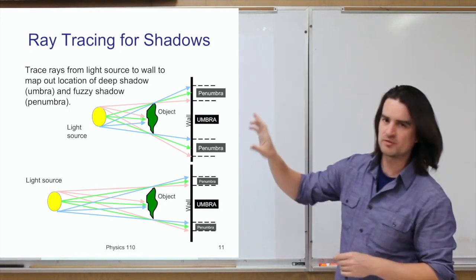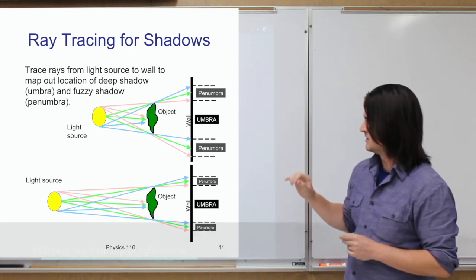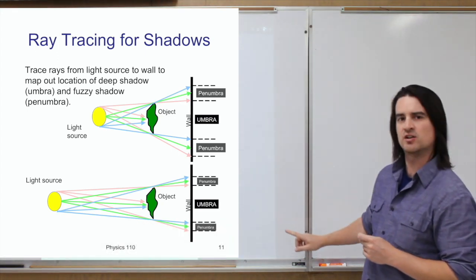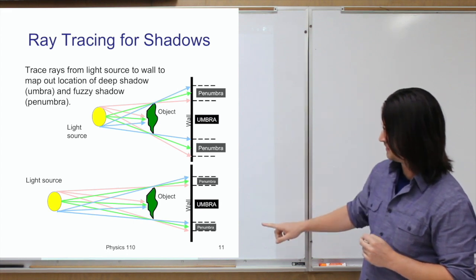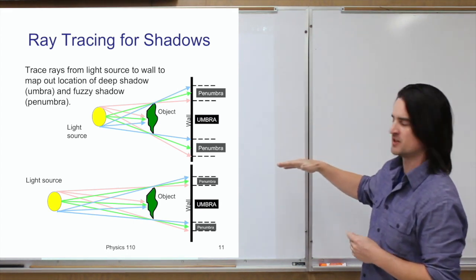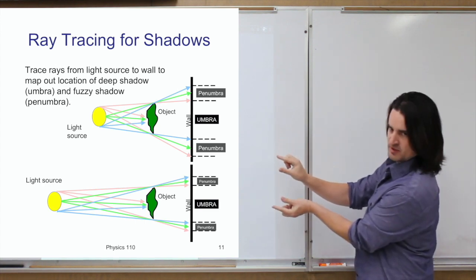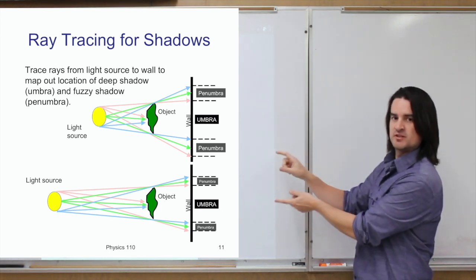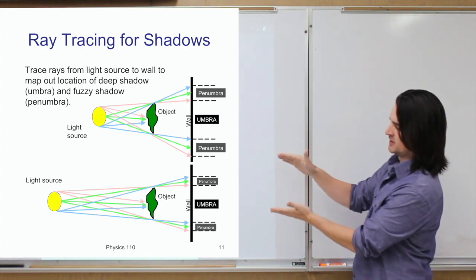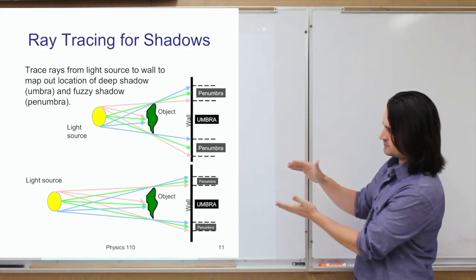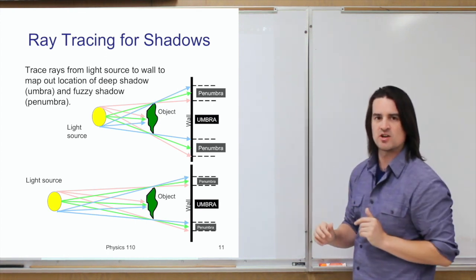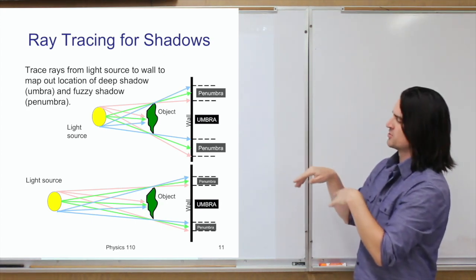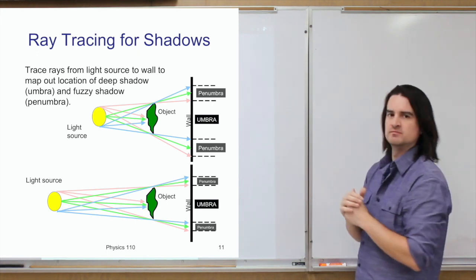If you take that light source and pull it further away, the light from the top going along the bottom of the object now hits closer in, and the light from the bottom going along the top also hits closer in. So the penumbra gets squeezed down — the fuzzy part of the shadow gets smaller, meaning you get a sharper shadow with a smaller penumbra. If the light source is very, very far away, all the light rays are essentially parallel and you get just a sharp shadow with no fuzzy part.